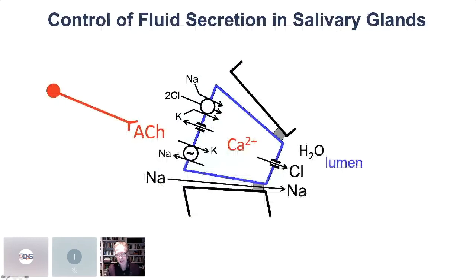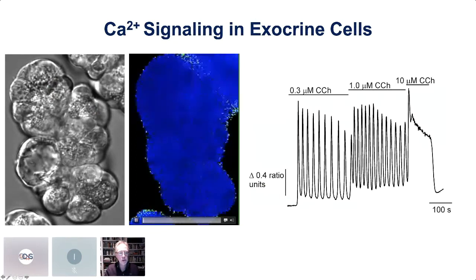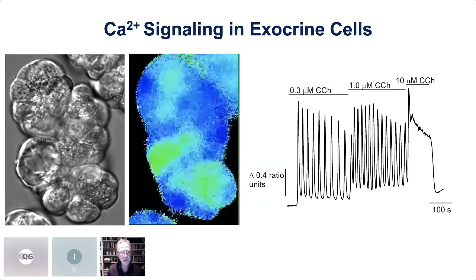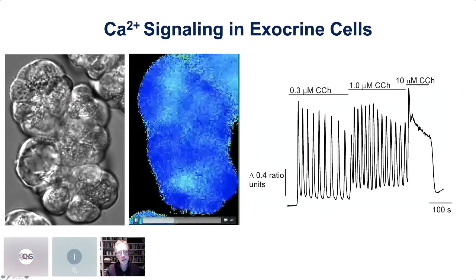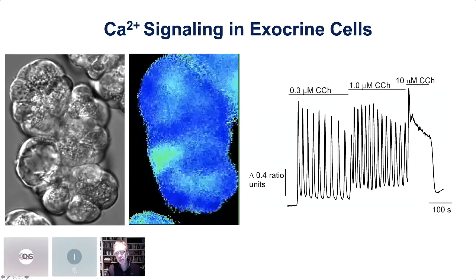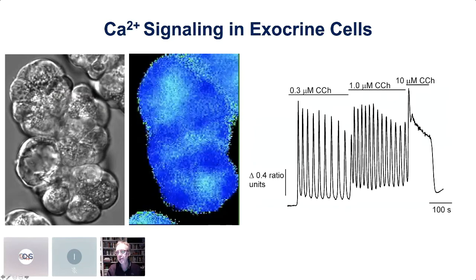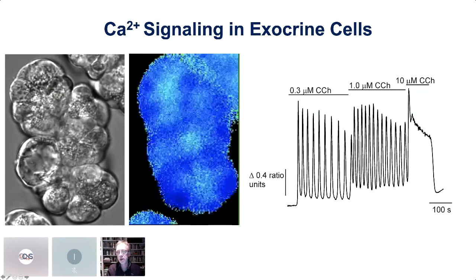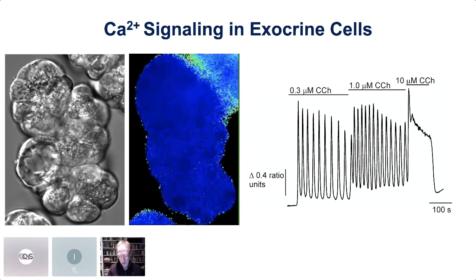Calcium activates the chloride channel and the potassium channel. This results in a chloride concentration gradient from the interstitium into the lumen, and that osmotic gradient leads to water flow — it's water transport by straight osmosis, not Navier-Stokes. Calcium is the proximal cause of this chloride gradient giving us fluid flow. Here's some old data from a mouse parotid cell showing high cytosolic calcium concentrations in a movie of multiple cells.